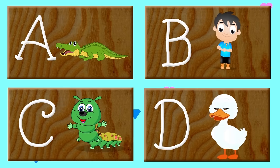A for alligator, a-a-alligator. B for boy, b-b-boy. C for caterpillar, c-c-caterpillar. D for den, d-d-d-den. E for eye, e-e-i. F for fruits, f-f-fruits. G for giraffe, g-g-giraffe. H for hair, h-h-hair.